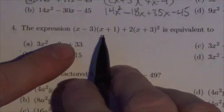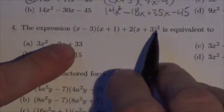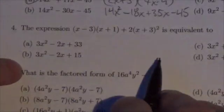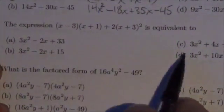It says the expression (x - 3)(x + 1) + 2(x + 3)² is equivalent to which of the following? Notice what our options are here. It looks like they've all been expanded out, so we've got to expand this out here.